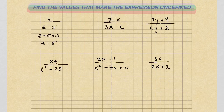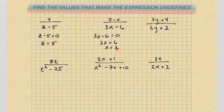For this next one, we have 3x minus 6 equals 0. Adding 6 to both sides, we get 3x equals 6. Dividing by 3, we get x equals 2. So if I were to plug in 2 into this expression, 3 times 2 is 6, minus 6 is 0. So x equals 2 is where this expression is undefined.